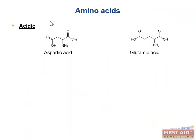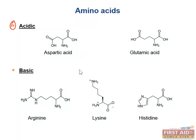The acidic amino acids have a negative charge at physiologic pH and include aspartic acid and glutamic acid, also known as aspartate and glutamate. The basic amino acids, which are positively charged at physiologic pH, include arginine, lysine, and histidine. Arginine is the most basic, and while histidine does not actually carry a positive charge at physiologic pH, it is still categorized as a basic amino acid.